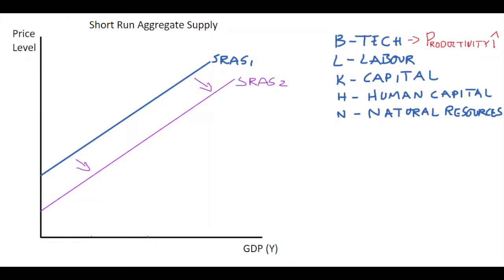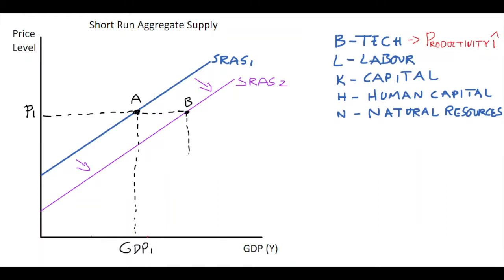We'll call that short run aggregate supply two. Starting at price level one on short run aggregate supply one, the output level produced by firms is GDP one. Because productivity has increased, the short run aggregate supply curve shifts out to the right, giving us point B, where for every given price level the GDP is greater. That applies to a productivity increase, a reduction in the cost of production, or if labor increased.